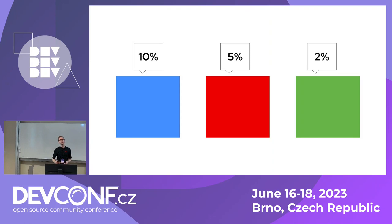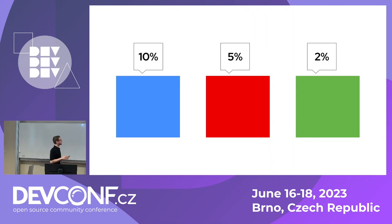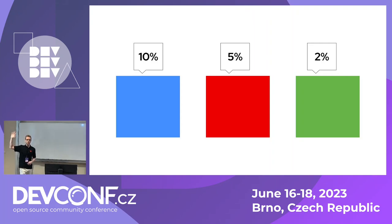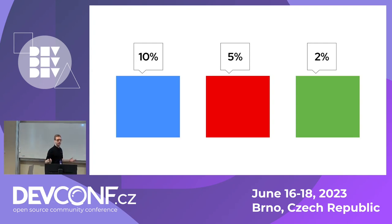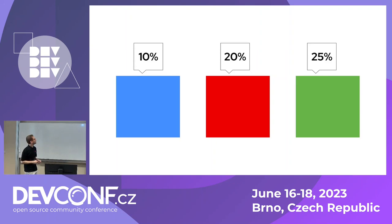The optimal strategy to maximize profit, if nothing changes in the environment, is to always show the blue banner. But assume something changes in the environment — a viral news story happens, people become interested in something else — and now the red and green banners perform better.